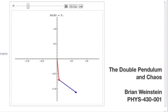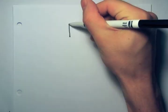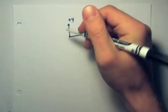All right, so we're going to look at the double pendulum and how it exhibits chaotic behavior. The first thing we're going to do is draw our diagram.